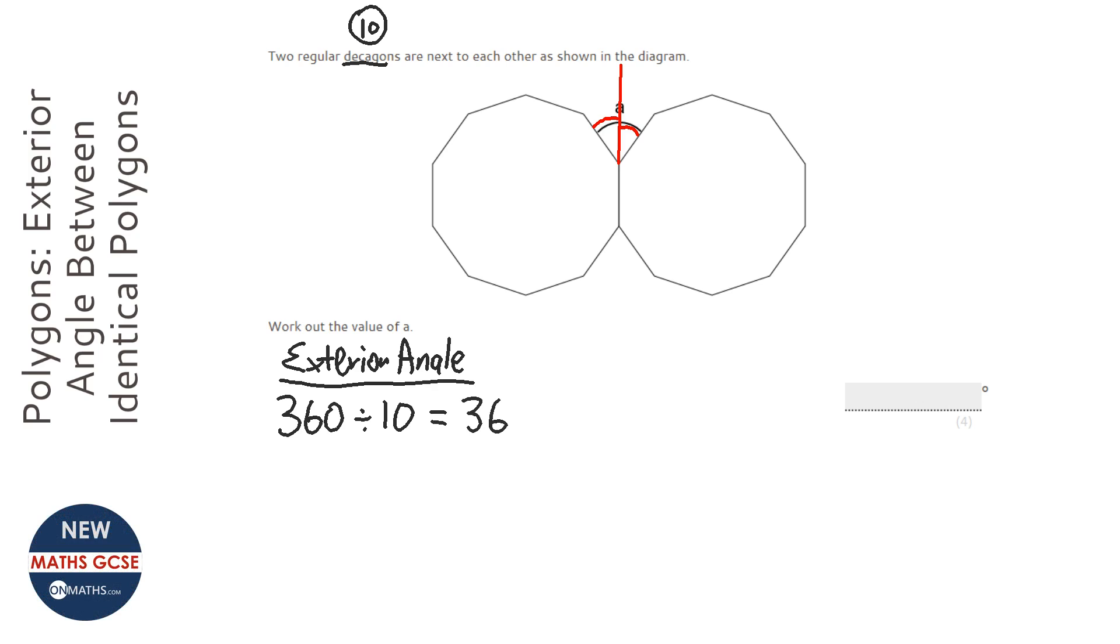So that's 36. If that one's 36 degrees there, and that one's 36 degrees there, then all you need to do is 36 times 2. Well, 6 times 2 is 12, 30 times 2 is 60, so that's going to be 72. Let's show the examiner that: 36 times 2 equals 72 degrees.